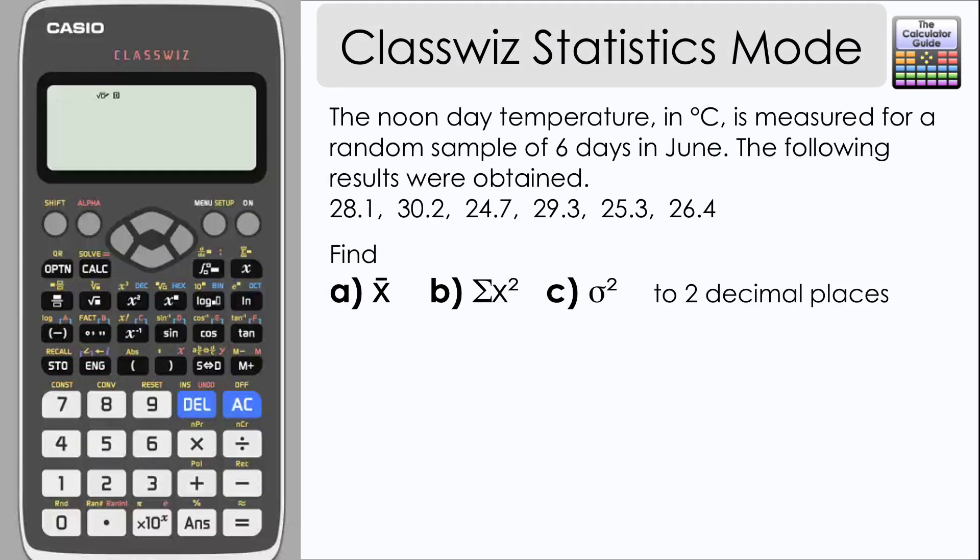We are going to explore this mode by answering this question. The noonday temperature in degrees Celsius is measured for a random sample of 6 days in June. And the following results were obtained. We need to find x-bar, so the mean, the sum of x-squared and the variance or sigma-squared to two decimal places.